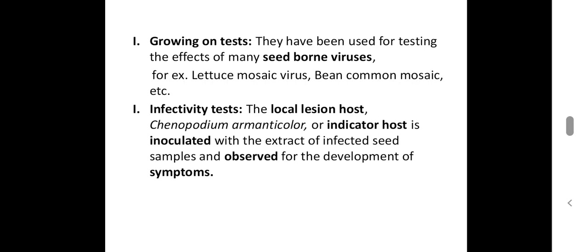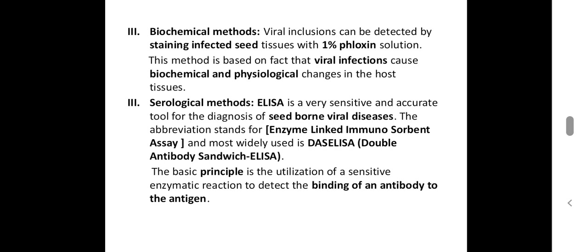The growing-on test is used mainly for seed-borne viruses, for example lettuce mosaic virus, bean common mosaic virus, etc. Then, infectivity test: for this test, a local lesion host or indicator host is used. The indicator host is inoculated with the extract of infected seed sample and observed for symptom development. Next, the biochemical method: here, virus infection can be detected by staining with 1% phloxin solution, which causes biochemical and physiological changes in the host tissues.